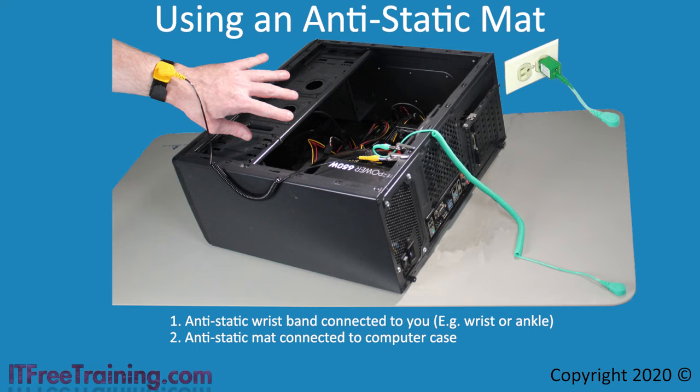This will allow any static electricity collected in the computer case to travel to the anti-static mat. Some anti-static mats will have a second connection. If your anti-static mat has this connection, it will be connected to the power or a ground point. This is optional as without it, the static electricity will drain into the table or surface it is placed on, or eventually into the air. You will notice the green and yellow alligator clips connected next to each other on the computer case. You want to put them next to each other as this provides a short distance for the static electricity to travel. It is best practice to connect the alligator clips to an unpainted metal surface on the computer case. Unfortunately, a lot of modern computer cases don't have any unpainted surfaces, so this makes it difficult. An easy way around this is to connect the alligator clips to the metal screws on the power supply.